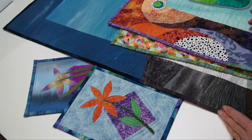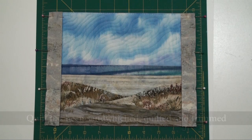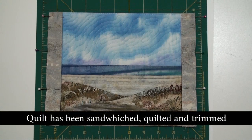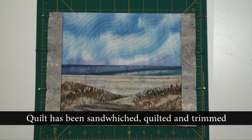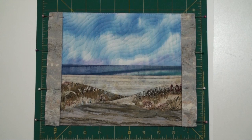So now here is how I make butted corner binding. The little landscape has the side bindings, which were cut two inches and then pressed in half, pinned to the sides, and the next step is to take it to the sewing machine and stitch them on.